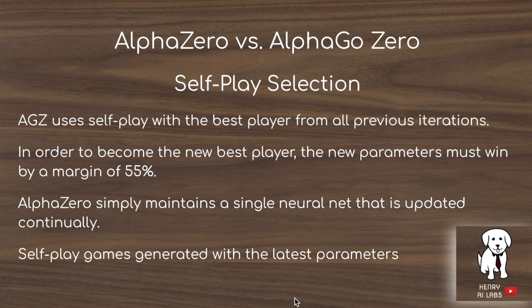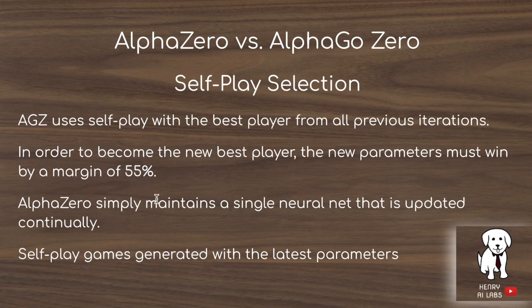The next difference is that AlphaZero is less strict about how it does self-play. AlphaGoZero requires a new network to win by a margin of 55% to become the best player used in the self-play training loop. AlphaZero throws that idea away and simply maintains a single neural network updated continually, with self-play games generated using the latest parameters. This simpler approach actually works better, and when comparing the two on Go, this along with no data augmentation are the key distinctions.